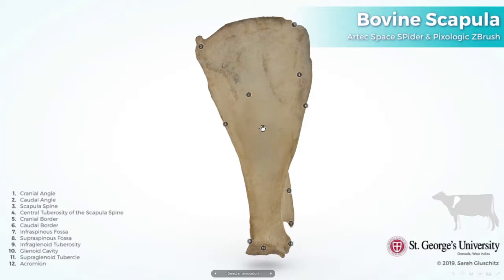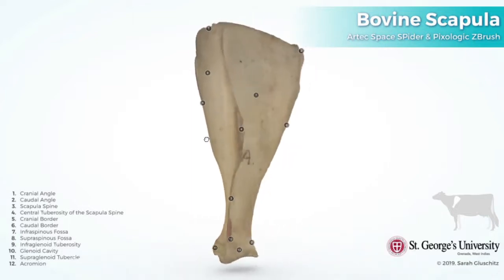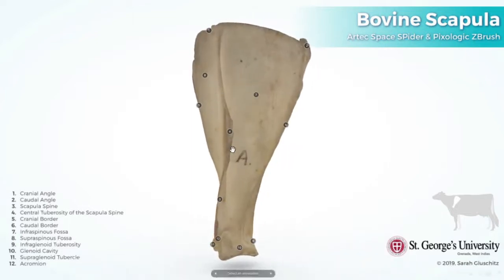Fossae: there are three fossae in the scapula bone. At the medial surface there is a shallow depression called the subscapular fossa, which is the site of attachment of the serratus ventralis muscle. At the lateral surface there is a spine which divides the lateral surface into two fossae: the supraspinous fossa and the infraspinous fossa. The infraspinous fossa is the site of attachment of the infraspinous muscle.